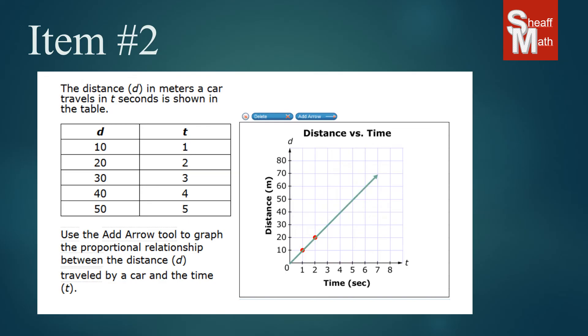On the CASPI practice test, I don't think they're going to allow you to put dots in there or points, so they're going to have you use the add arrow function right there. You do that and you'll make the line right through there. I hope that helps.